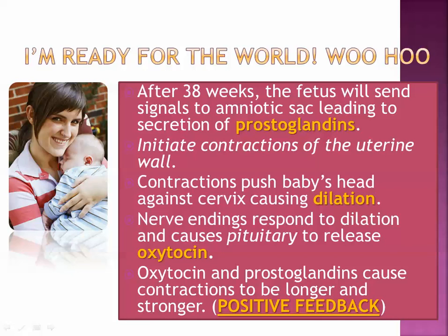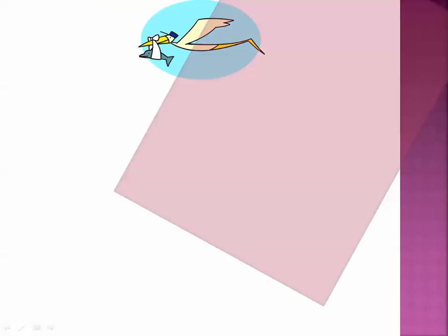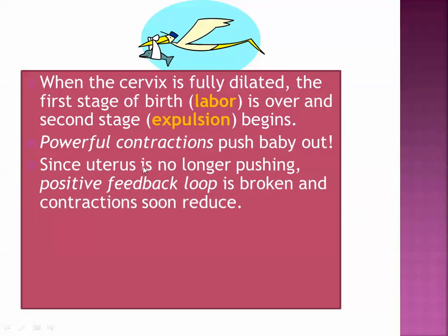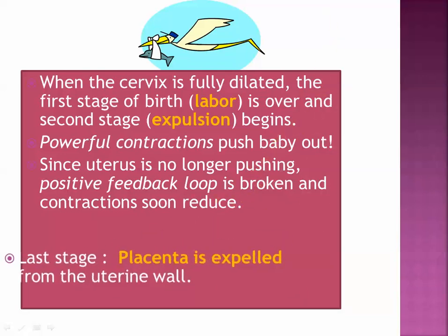That's a good thing because it's going to help push the baby out of the body. After the baby has left the body, you won't have these kind of pushes anymore, and all of a sudden you're going to end up with no more contractions — which makes sense because after the baby is out, you don't need the uterine wall to be contracting anymore. This stage is called expulsion. When a woman goes into labor, the first stage is called labor and the second stage is called expulsion. Powerful contractions push the baby out. Since there's no more pushing, that positive feedback loop is broken and the contractions reduce.